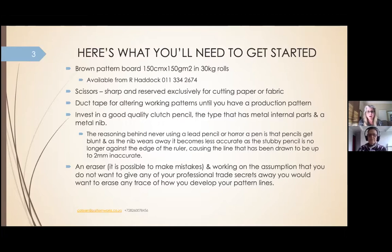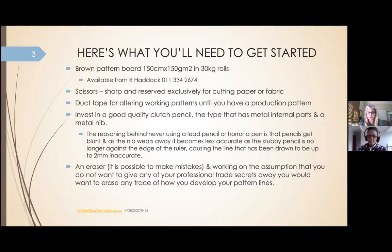A lot of home pattern makers use tissue paper — personally, that would drive me insane. It's very unwieldy to work with and pieces shift when you're tracing them off onto the fabric. I prefer a hardboard which comes in a 120-centimeter width at about 120 grams per square meter, and I buy it in 30-kilogram rolls. I like working on 150 centimeters because it's the same width as a fabric would be.